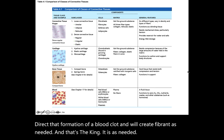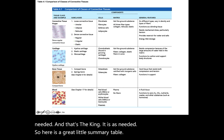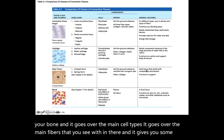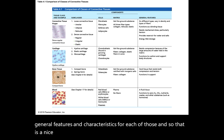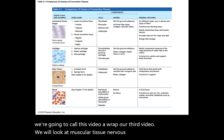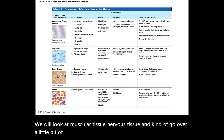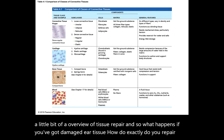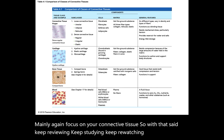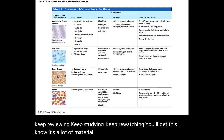Here is a nice summary table of connective tissue proper, cartilage, blood, and bone — going over the main cell types, main fibers, and general features and characteristics for each. So with that, we're going to call this video a wrap. Our third video will look at muscular tissue, nervous tissue, and a brief overview of tissue repair. Keep reviewing, keep studying, keep re-watching — you'll get this. I have faith in you, and I'll catch you guys later.